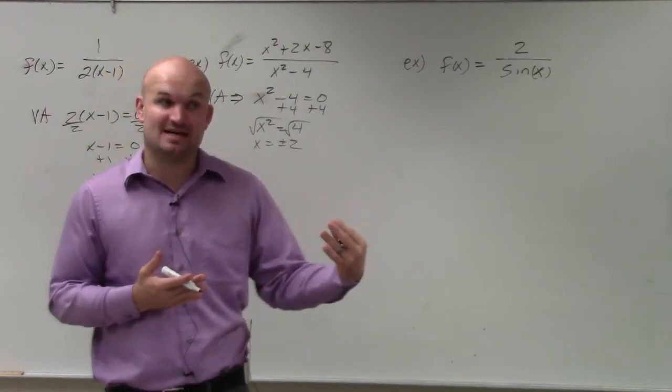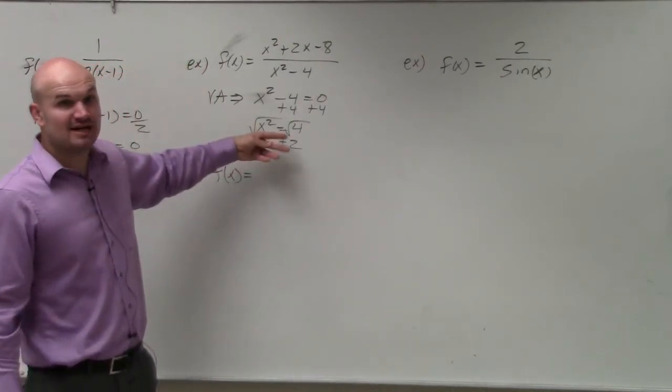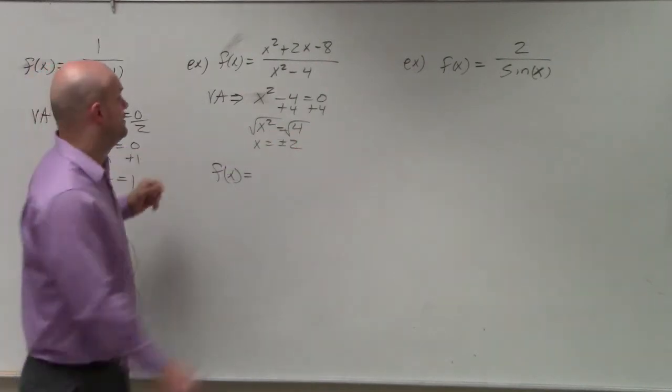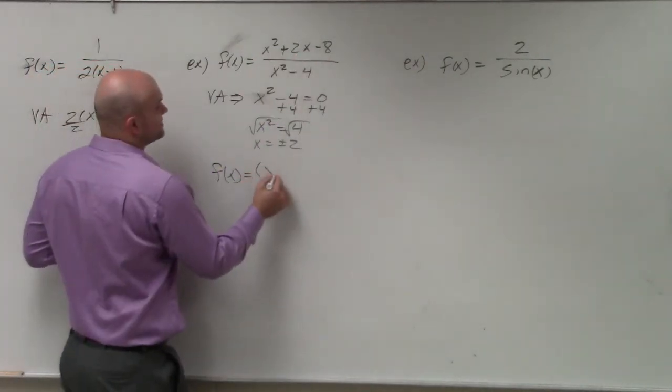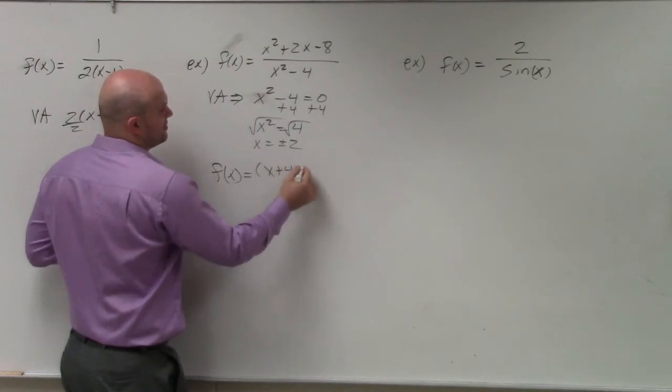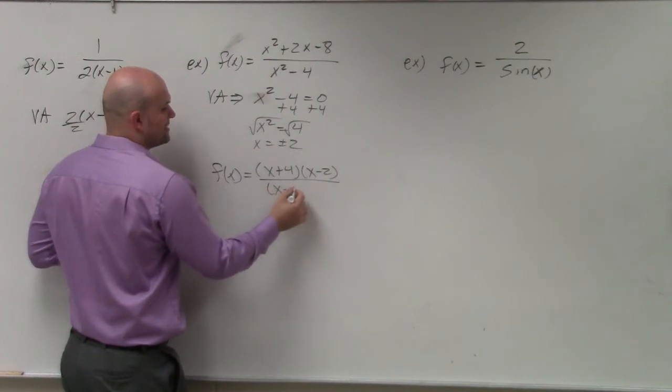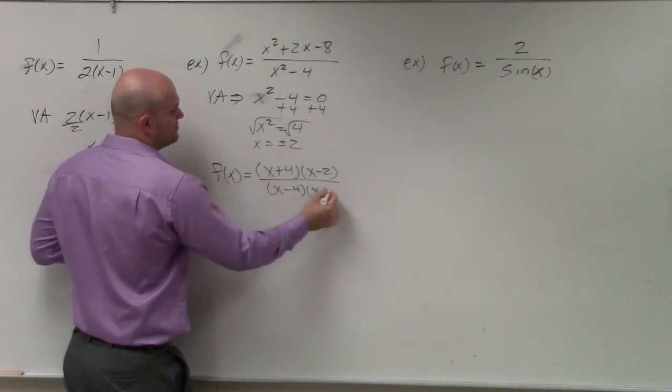So if we have a removable discontinuity, which could be plus or minus two, or it could be both, then those are not asymptotes. So when I factor this out, I get x plus four times x minus two. X squared minus four is x minus four times x plus four.